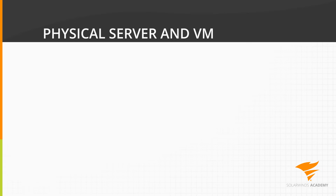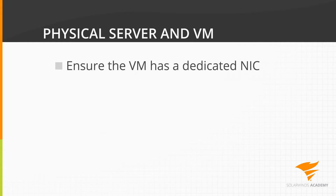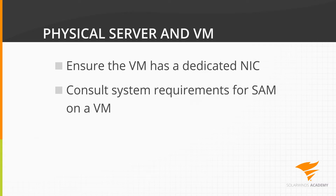Before we go any further, let's discuss whether you plan on using physical hardware or a virtualized environment. Orion can be installed on either. However, if you're planning to use a virtual server, you'll need to ensure that the Orion server has a dedicated network interface. SNMP traffic tends to get lower priority than other traffic, so you may see performance issues or drops if the Orion server is competing with other servers for the same busy NIC. If you plan on installing Orion on a virtual server, take extra care to read the virtual server system requirements.